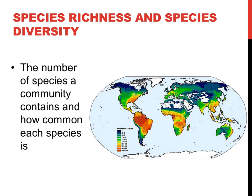Species richness or diversity in various parts of the world are shown in the graphic to the right. Areas in red and orange have a very high species richness — note that most of these locations would contain swamps or rainforest. Areas in blue and green have very low species richness, and many of these areas are in very dry and/or very cold locations.